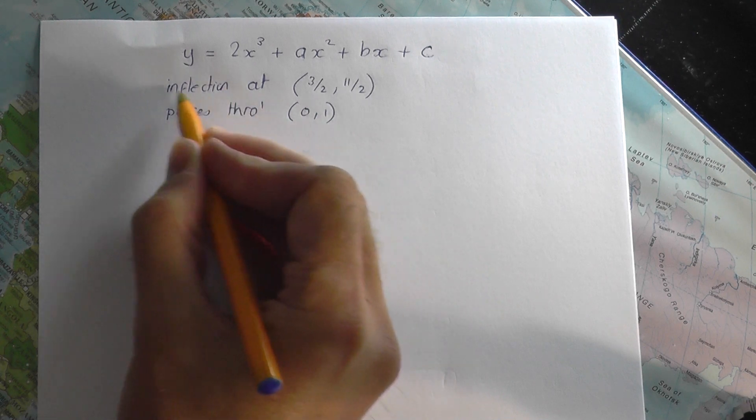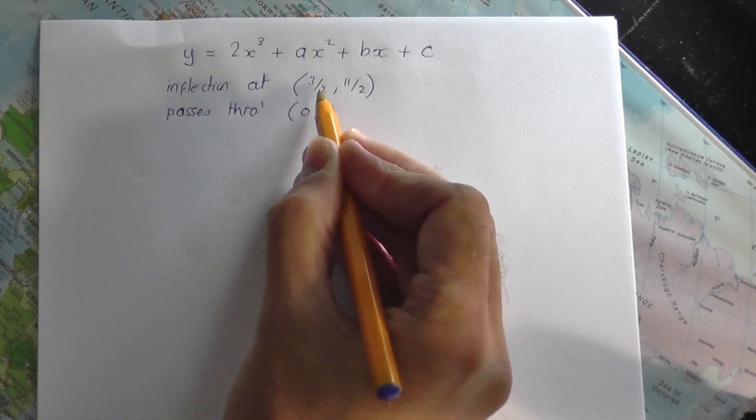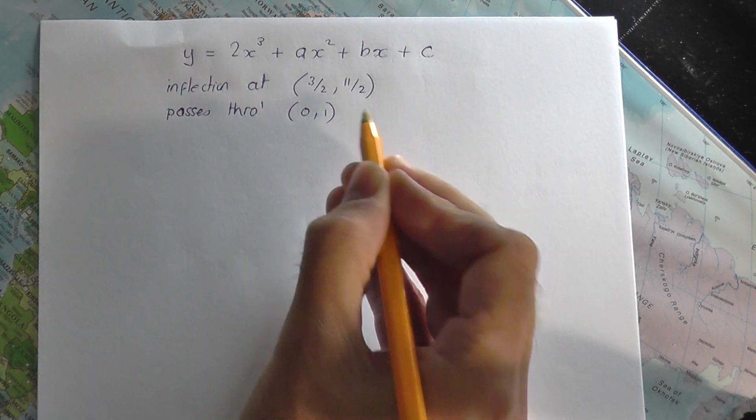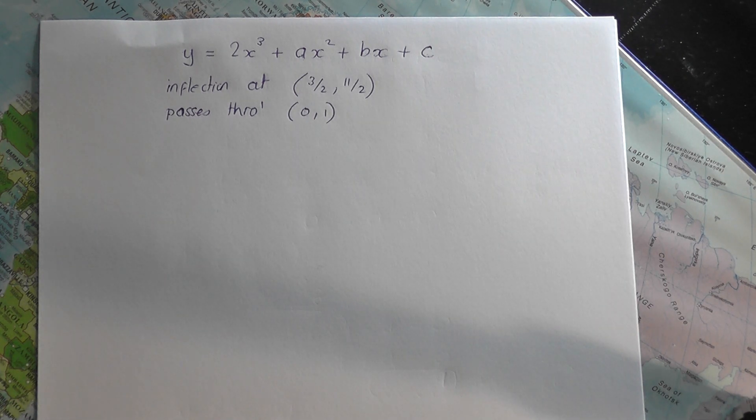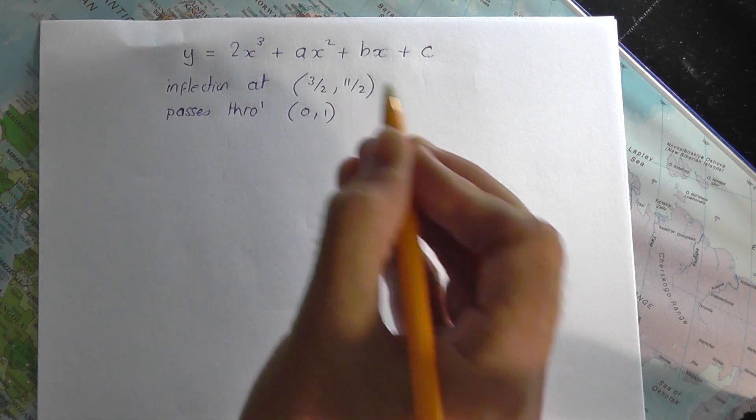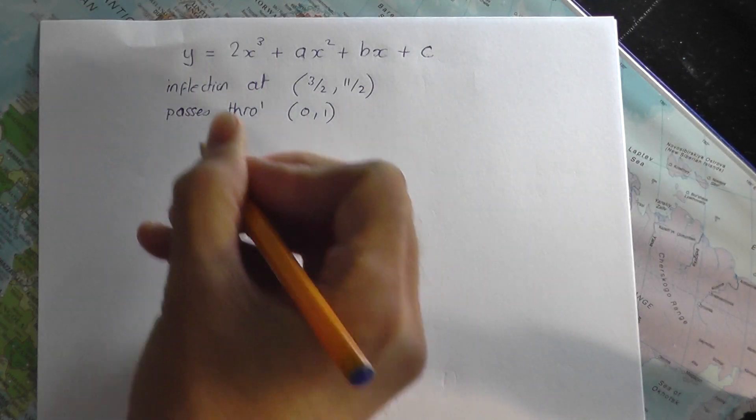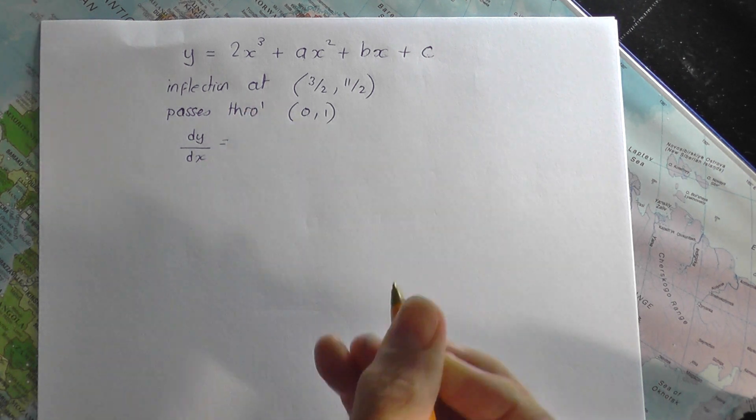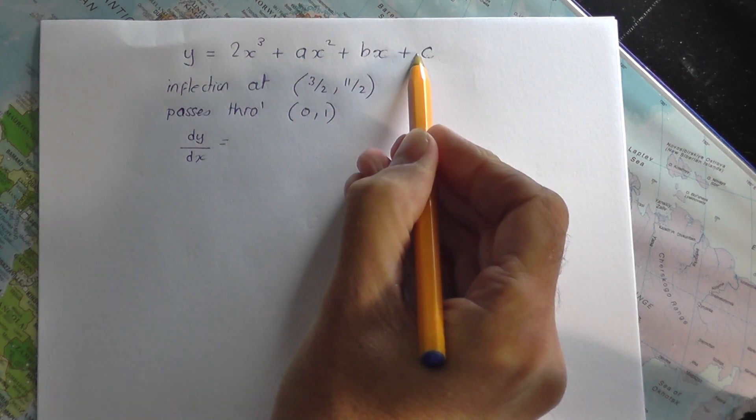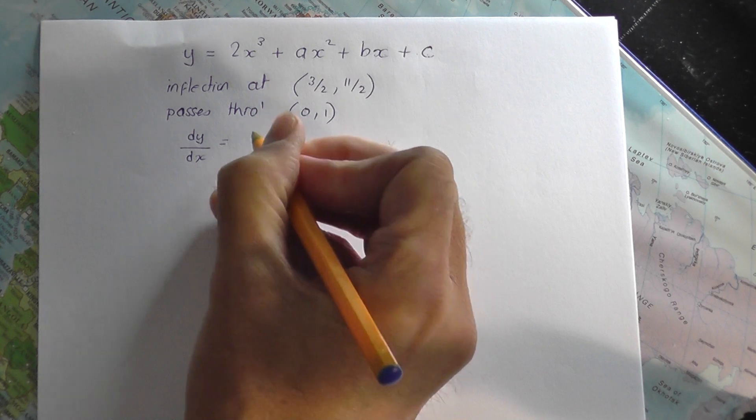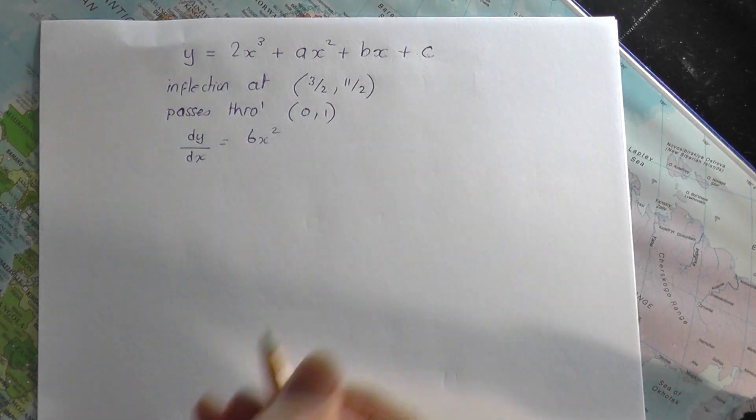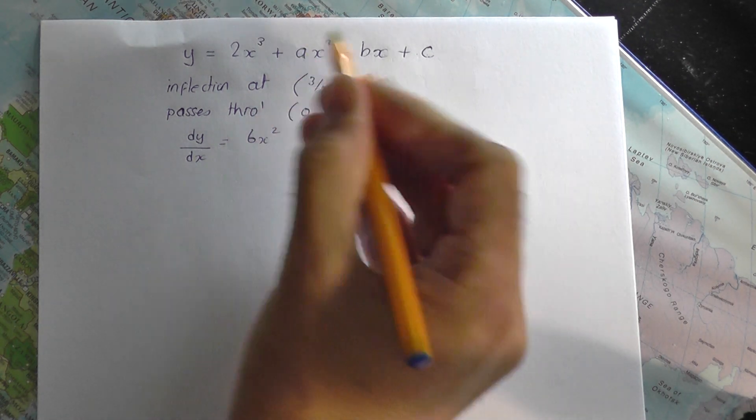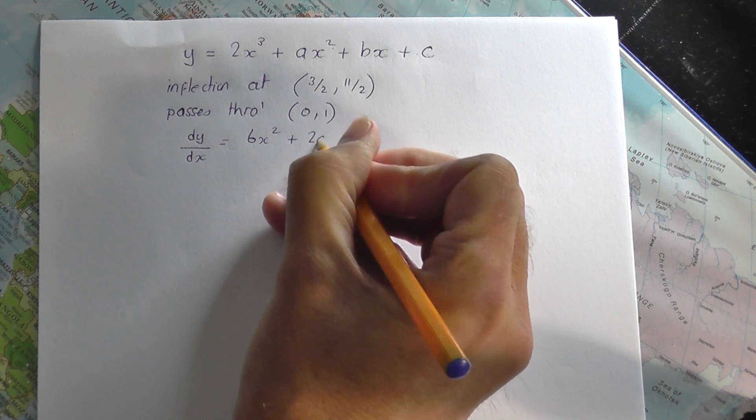OK, so inflection point at that. There's no mention of stationary point information. Right, well, if I know there's an inflection point at 3 over 2, 11 over 2, what I'm going to do is work out dy by dx first of all. Differentiate this as it stands. The 3 to the front means 6x squared when you differentiate.